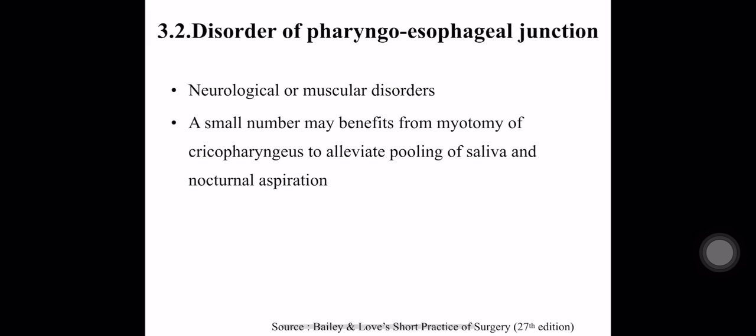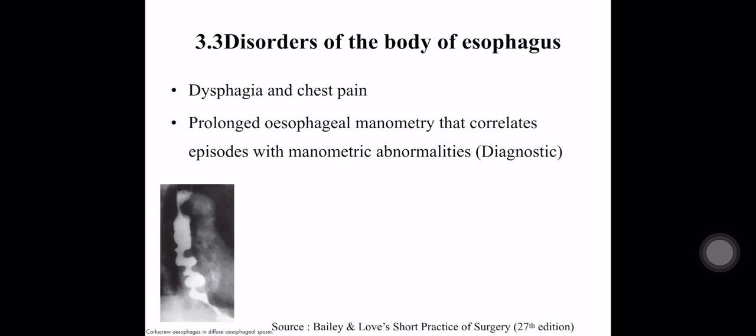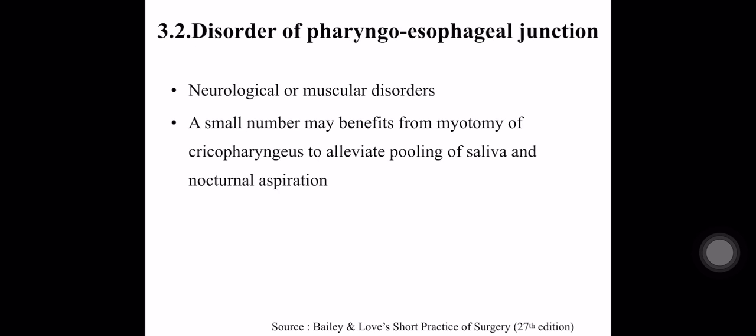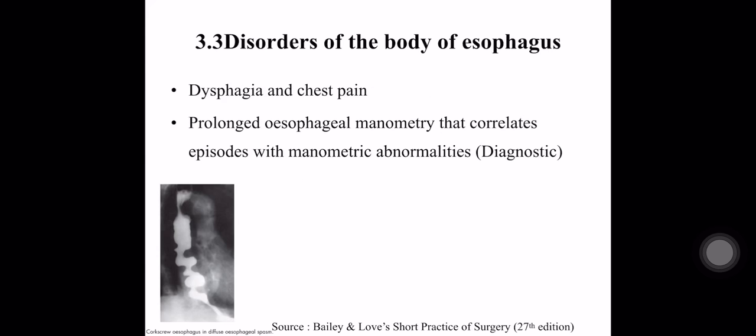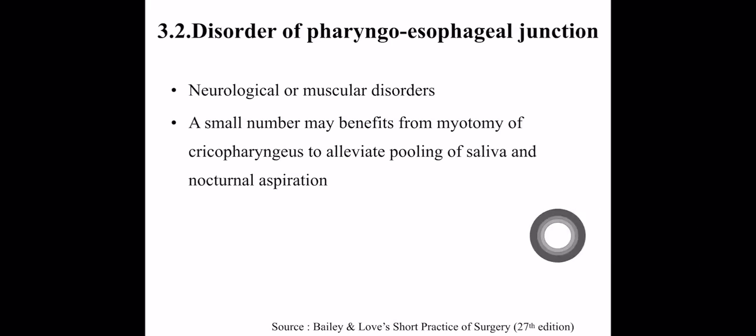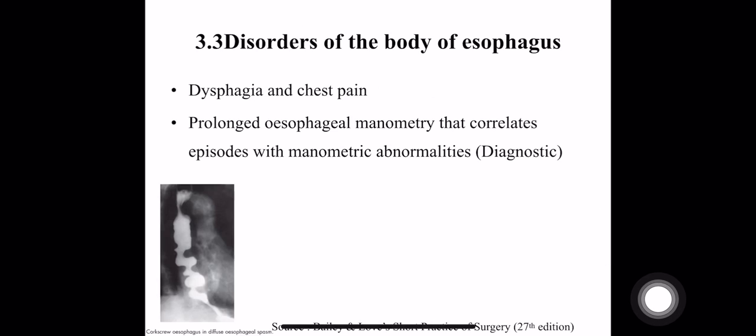Disorders of the pharyngoesophageal junction are due to neurological and muscular disorders, but you can perform surgery like myotomy of the cricopharyngeus to alleviate pooling of saliva and nocturnal aspiration.